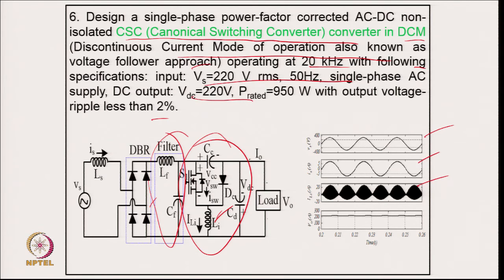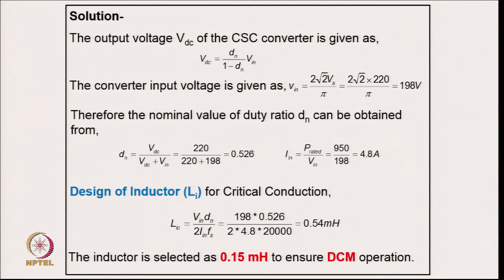The only component operating in DCM is the input inductor, which provides the discontinuous mode of operation needed for inherent power factor correction. The output voltage is well regulated with the ripple within 2 percent. Coming to the numerical part: the output voltage of the canonical switching converter is calculated from the buck-boost relation, with the average input voltage after the diode rectifier corresponding to DCM.